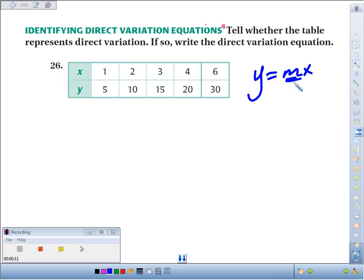There has to be this constant multiple, and to find that multiple, to get m by itself, we divide by x. So if we take y divided by x and we always get this common multiple, we're good to go.